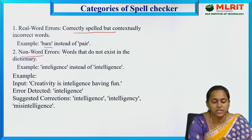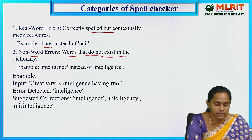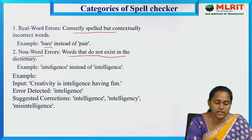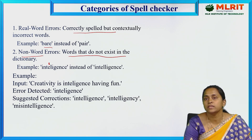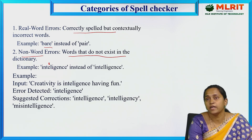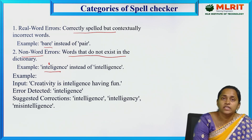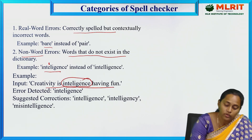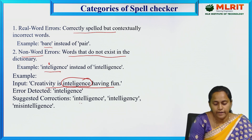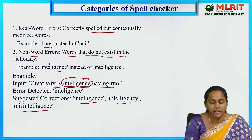Non-word errors are words that do not exist in the dictionary. For example, 'intelligency' instead of 'intelligence' — the letter 'l' is missed or the suffix is wrong. The pronunciation may sound similar, but the word does not exist in the dictionary. Given the sentence 'Creativity is the intelligency having fun,' the spell checker suggests corrections like 'intelligence'.